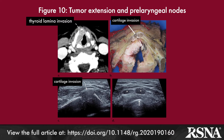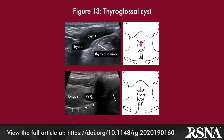Regional nodal status is also assessed by ultrasound, where pre-laryngeal or delphian nodes — which are an important route of lymphatic dissemination in laryngeal cancer — can be more easily seen and distinguished from the strap muscles than on CT or MRI. For benign laryngeal disease, ultrasound can readily detect follicular and thyroglossal cysts.